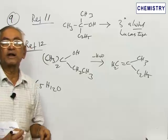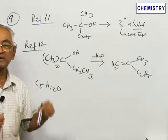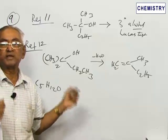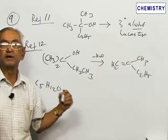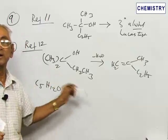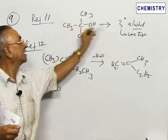Lucas test is one of the tests to identify the alcohol. If it liberates, if the reaction is very vigorous, it mixes with anhydrous zinc chloride and concentrated HCl instantaneously and forms turbidity immediately, then it shows that it forms, then it is a tertiary alcohol.